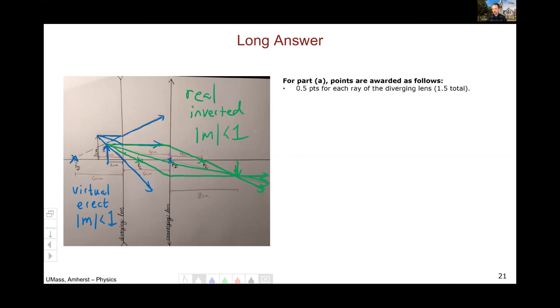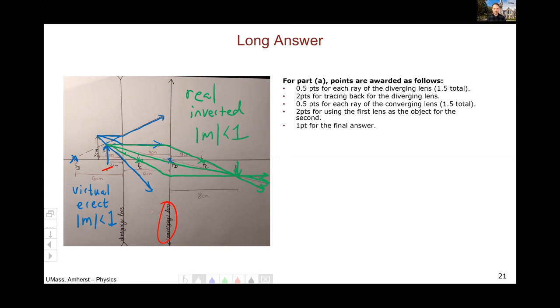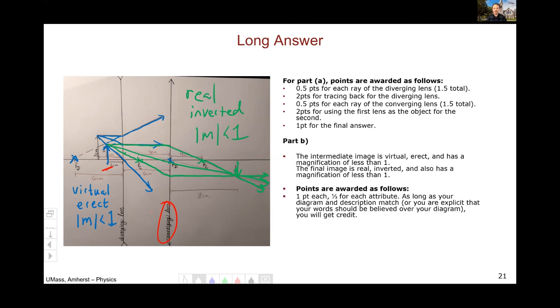For part A, the points were awarded as follows. Half a point for each ray for the diverging lens. Two points for using the image of the first as the object for the second. And then one point for basically your final answer. For part B, one third each rounded up is how it was given. And as long as your words matched your diagram, you were awarded credit. Or if you were explicit that your word should be believed over your diagram. So there was no double docking on this.